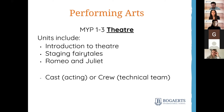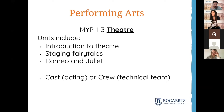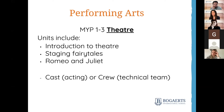Moving on to theatre: MYP 1 to 3 have units including introduction to theatre, staging fairy tales, and Romeo and Juliet. Students always have the option of being part of the cast — the actors — or part of the crew, which includes costume design, hair and makeup, stage design, lighting, audio, music, and props. We never force students to perform on stage if they're not comfortable, but we do like to encourage them to be risk-takers if they are comfortable.